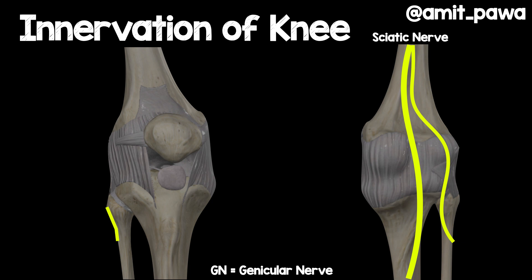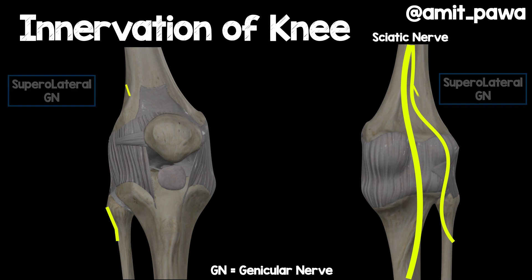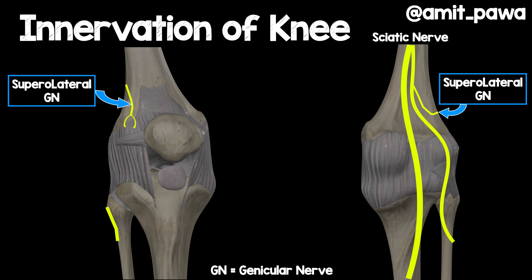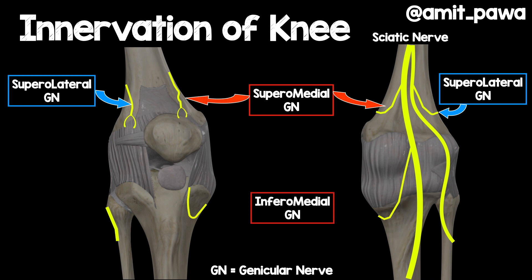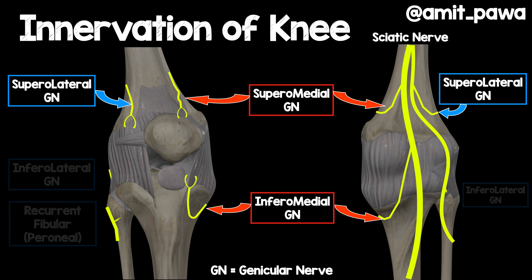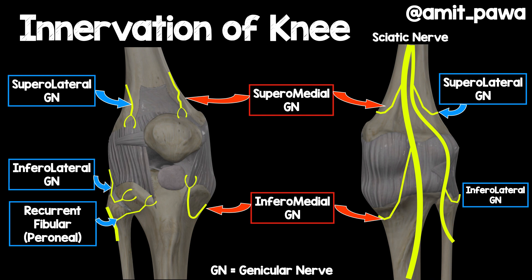Now let's look in more detail at branches of the sciatic nerve important for knee arthroplasty analgesia. The supralateral genicular nerve lies on the supralateral aspect of the femur just where it flares out before approaching the condyles. There is also a supramedial genicular nerve and an inframedial genicular nerve. On the lateral aspect, there is an infralateral genicular nerve, but also the recurrent fibular or recurrent peroneal nerve. These genicular nerves are important targets when looking at motor-sparing knee blocks.